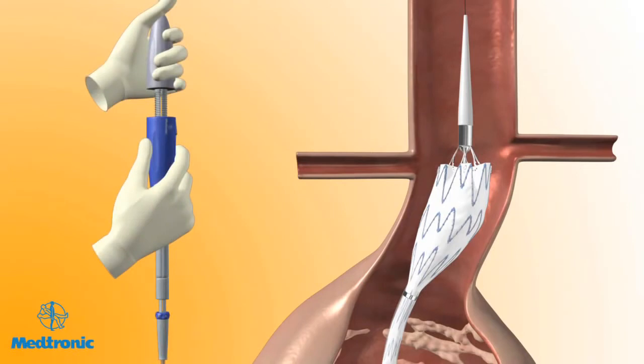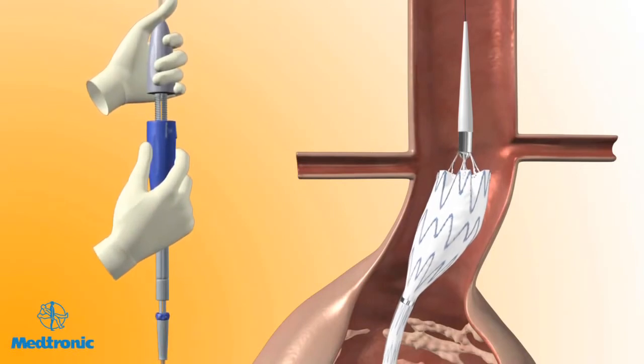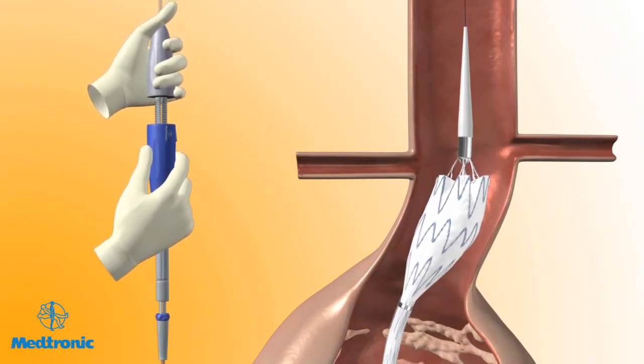If needed, gently move the entire delivery system proximally or distally until the proximal end of the graft material is even with the distal edge of the lowest renal artery.